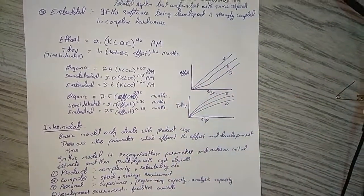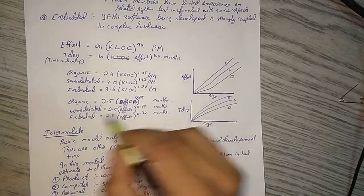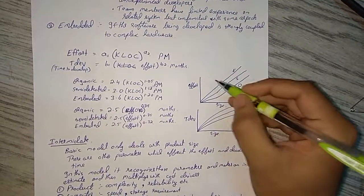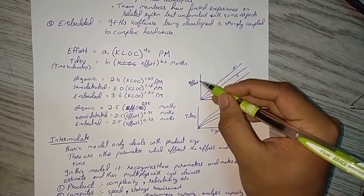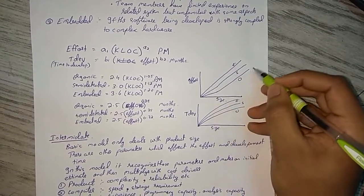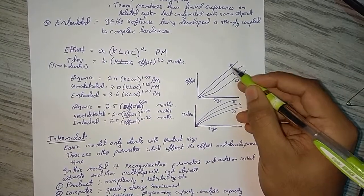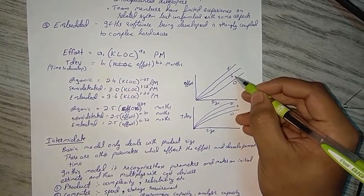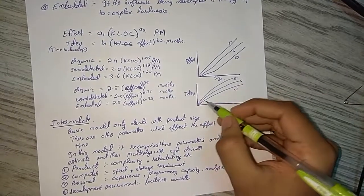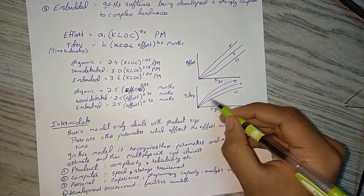This is the unit of time to develop. So this was the basic model. We see the graph, so the effort versus size graph: organic will be the lowest, semi-detached a bit middle of embedded and organic. Then time to develop, same procedure. This is going like this, this is going upwards, this downward graph, this upward graph.